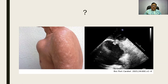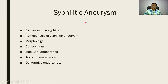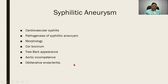What is the basic pathology? Cardiovascular syphilis by itself is a question. The manifestations include a syphilitic aneurysm; sometimes the right ventricle can be enlarged and it becomes similar to the heart of cattle — so it is called cor bovinum or a cow's heart. Then there is a tree bark appearance, aortic incompetence, and obliterative endarteritis. These terms should be very familiar as they can be asked as individual questions, and each one should be represented in your answer.